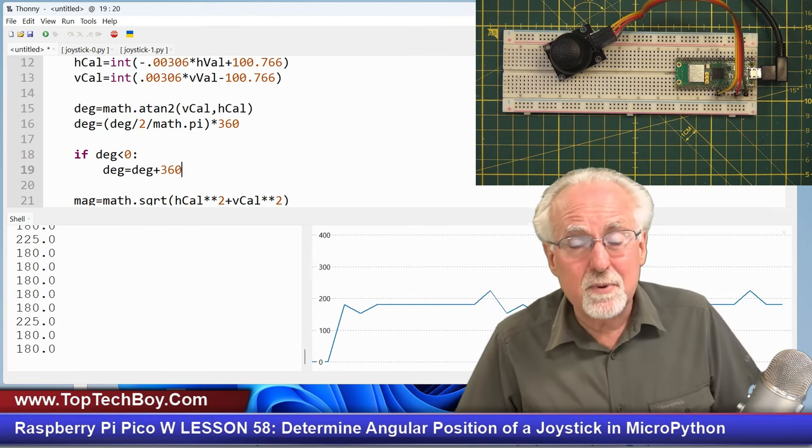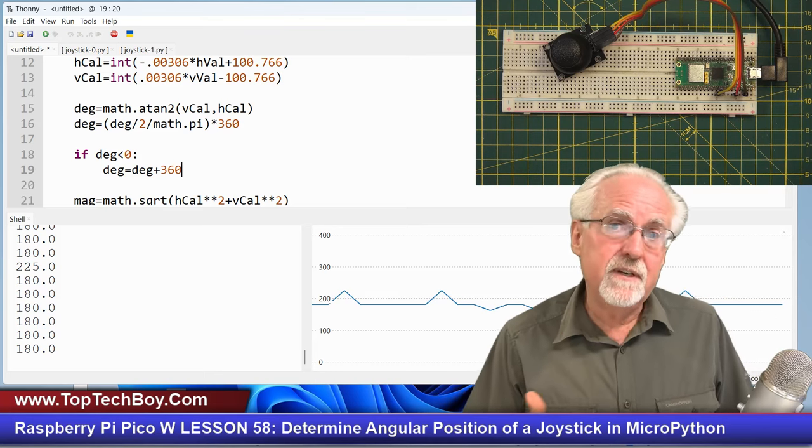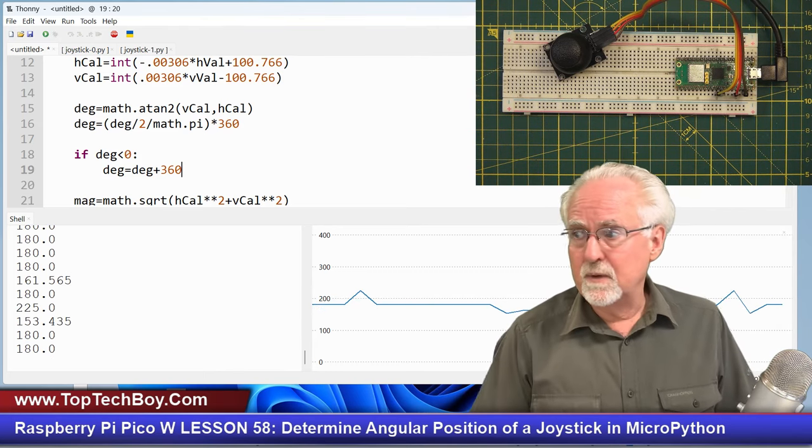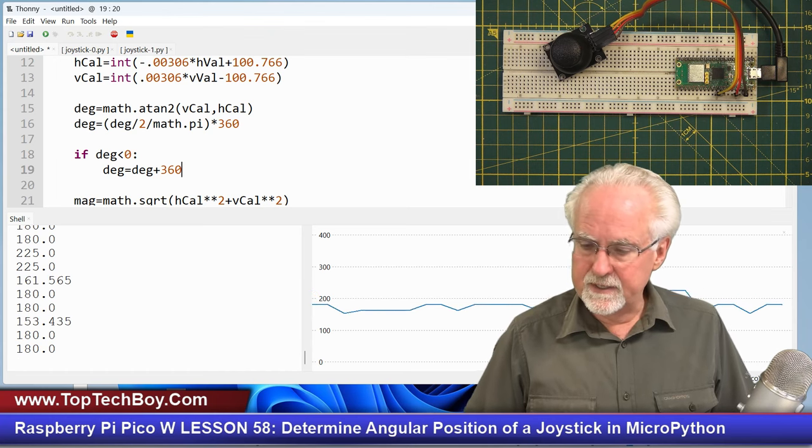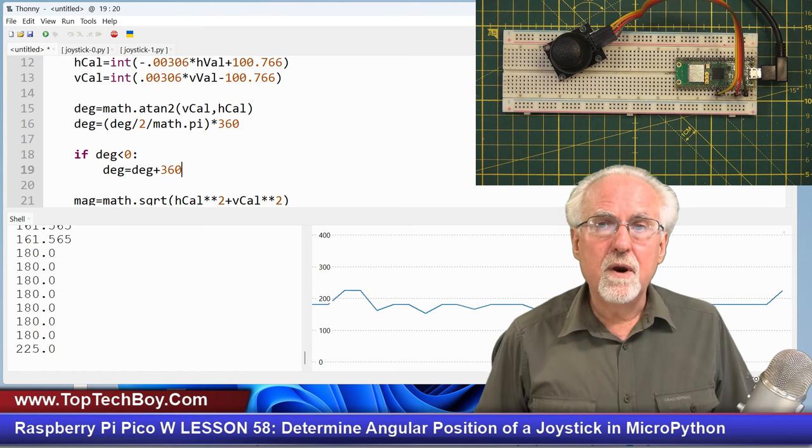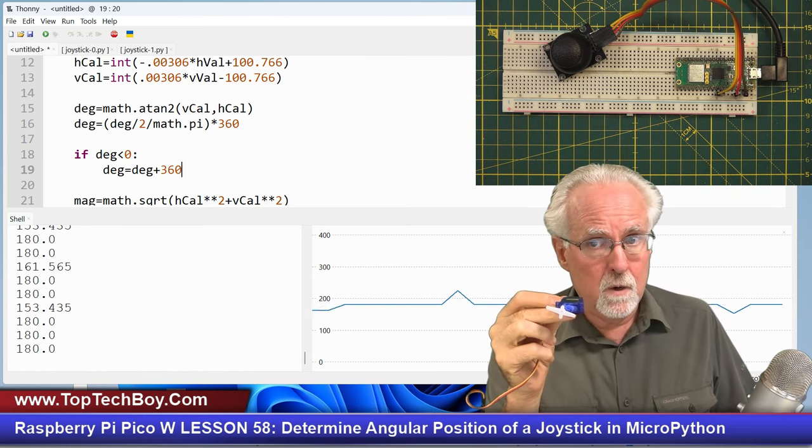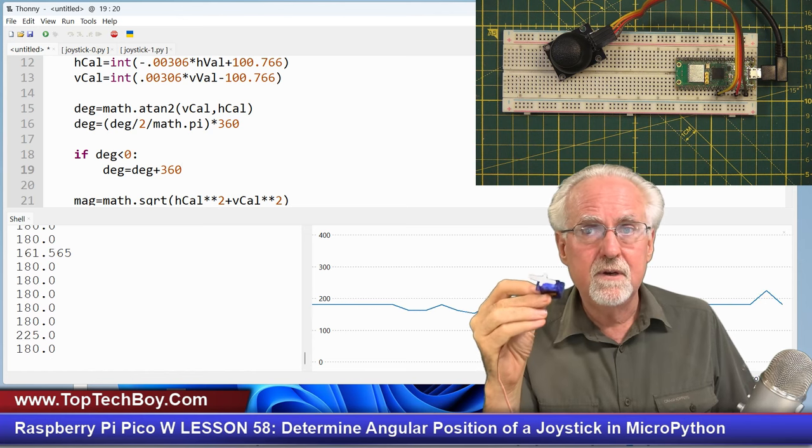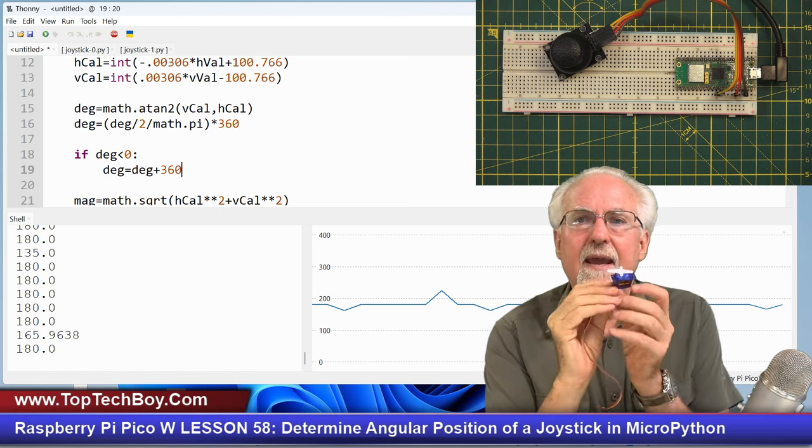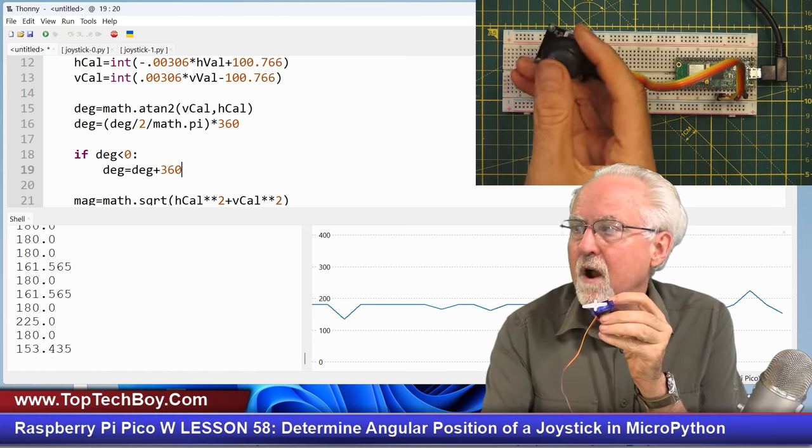That was pretty straightforward. Hopefully, you guys had as easy of a time with it as I did. This is reinforcing things that we learned in earlier lessons. Now, what is the homework assignment? The homework assignment now is for you to get your little servo out of the SunFounder kit, hook the servo up to your circuit, and then control the position of the servo from the joystick.